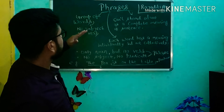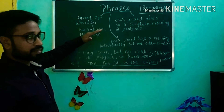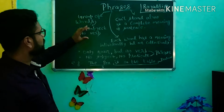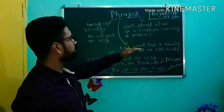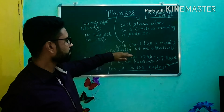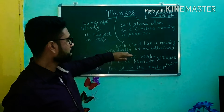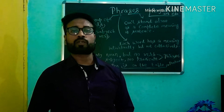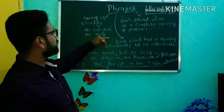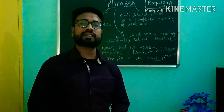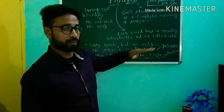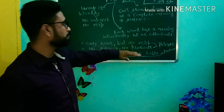Phrases. It is clearly defined that a phrase is a group of words which has no subject and no verb. Phrases can't stand alone as a complete meaning of a sentence. Each word has a meaning individually, but not collectively. In other words, a phrase is a group of words which lacks subject and verb — only a noun but no verb, or no subject and no predicate.